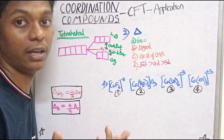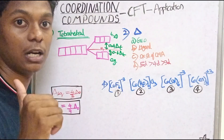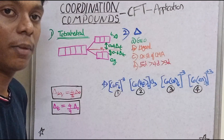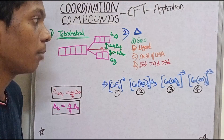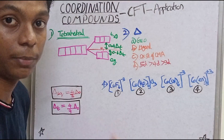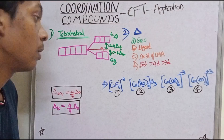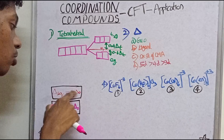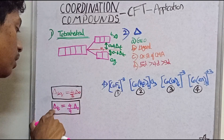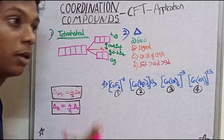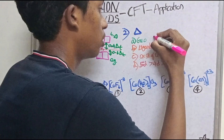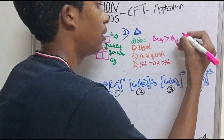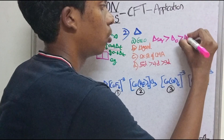Splitting energy depends on the following factors. First is geometry: if we consider coordination complexes of the same geometry, the splitting energy order is square planar > octahedral > tetrahedral. The second factor is ligand strength.